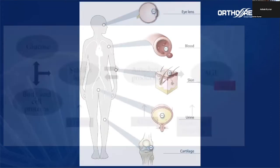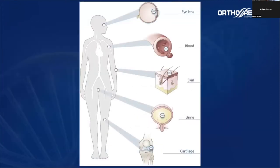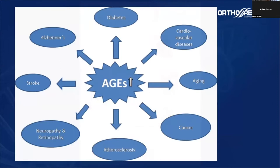The problem is that these end products start to accumulate in different tissues of our body — our eyes, the blood vessels, and as well in bones and cartilage. These advanced glycation end products are linked to many diseases like diabetes, aging, atherosclerosis, and so on.